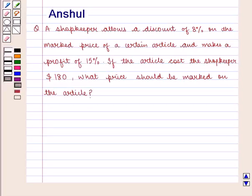Hello and welcome to the session. In this session we are going to discuss the following question. A shopkeeper allows a discount of 8% on the marked price of a certain article and makes a profit of 15%. If the article costs the shopkeeper $180, what price should be marked on the article?